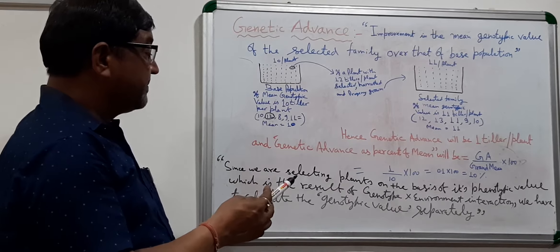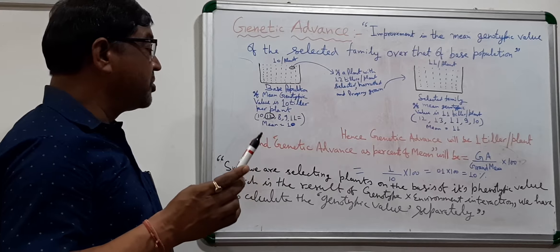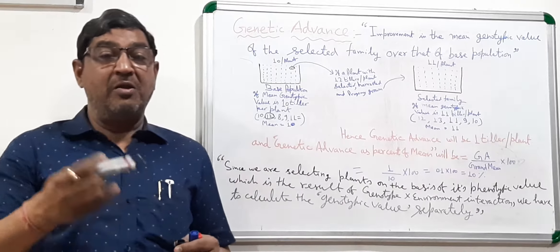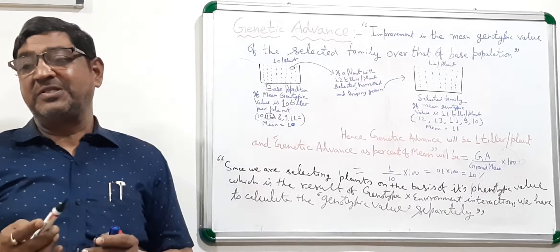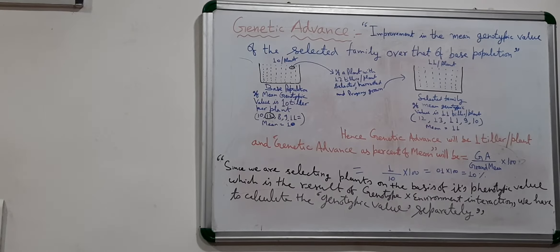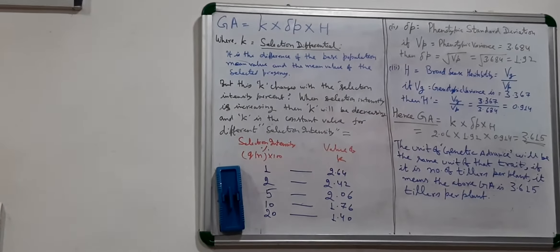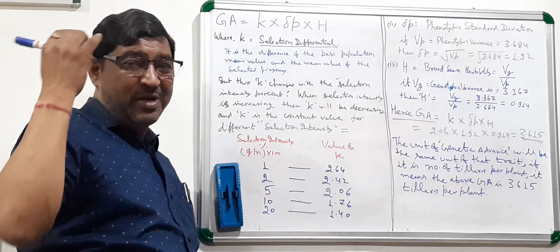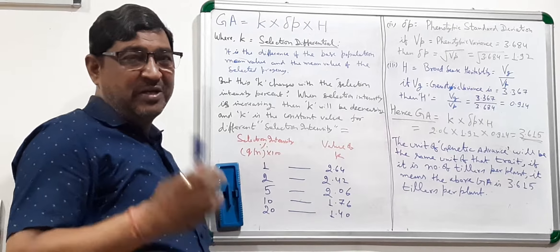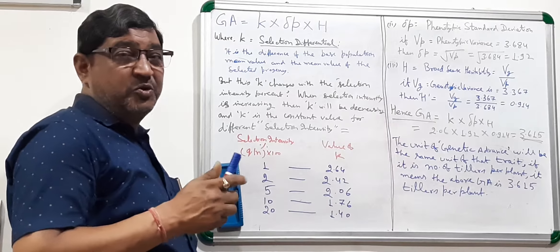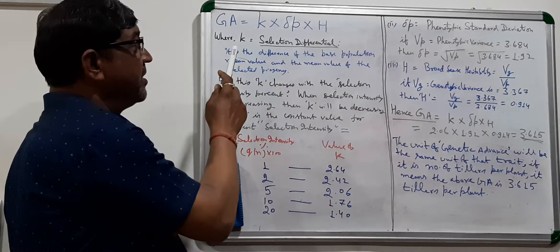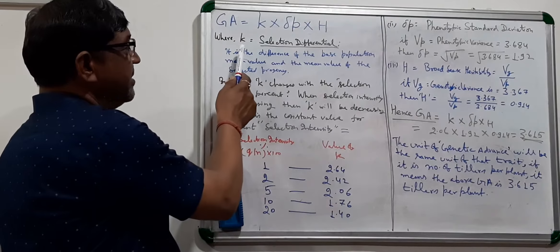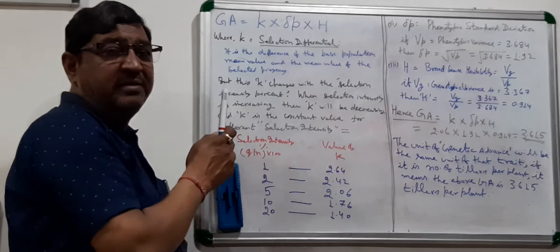Since we are selecting plants on the basis of phenotypic value, which is the result of genotype-environment interaction, we have to calculate the genotypic value separately. Now we are going to calculate genetic advance. Genetic advance is equal to k multiplied by σp into H (capital H), where k is the constant value, that is selection differential.